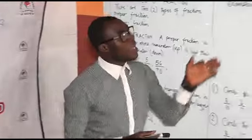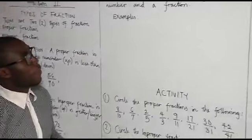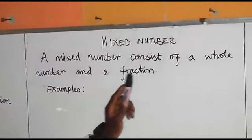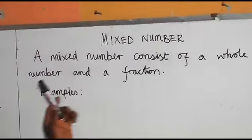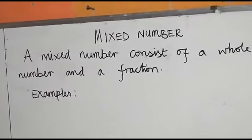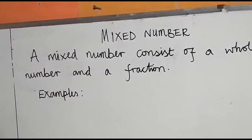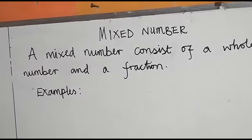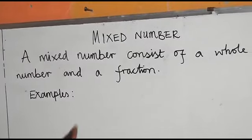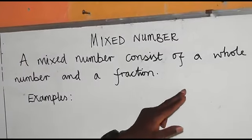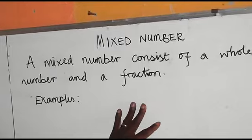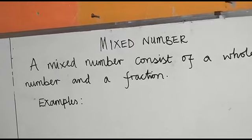Now let's move to mixed number. A mixed number consists of a whole number and a fraction. The reason we didn't include it as a type of fraction is because it consists of a whole number combined with a fraction.